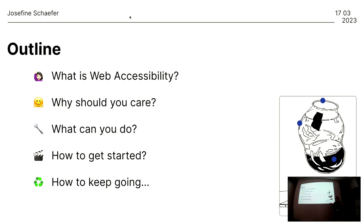Just a really quick overview of what we're going to do. We're going to have a quick look at what web accessibility is and why you should care. I'm going to give you some points to make your case. And then we're going to dive into a more practical part — have a look at how we can test for web accessibility: color contrast, keyboard accessibility, and semantic HTML. And then we'll look at how to get started and how to keep it going.